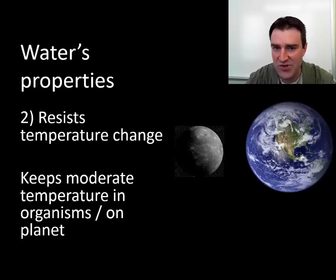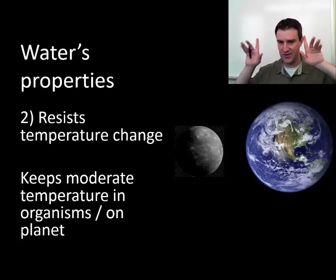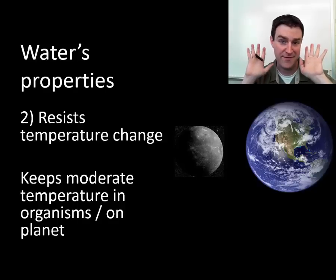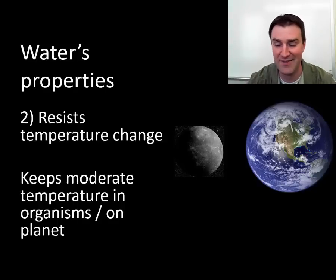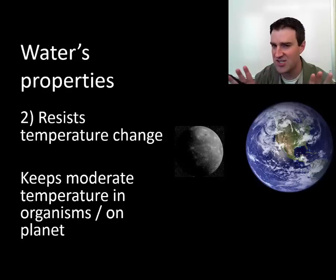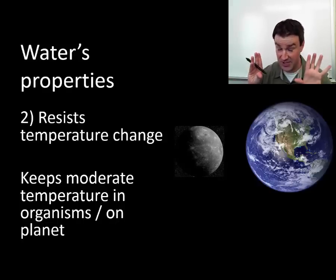Water resists temperature change, property number two. Because we are a mostly water planet, planets when they spin around their own axis are facing the sun half the time, and they're facing very cold space the other half of the time. So it's really important for our planet to support life.